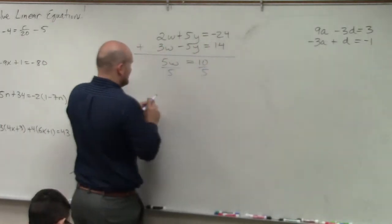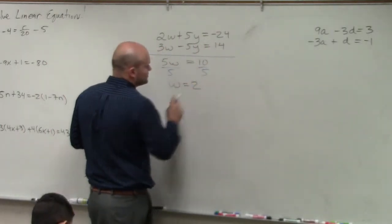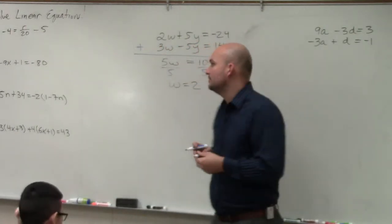So now, just divide by 5, divide by 5, w equals 2. OK, now negative 2, thank you.